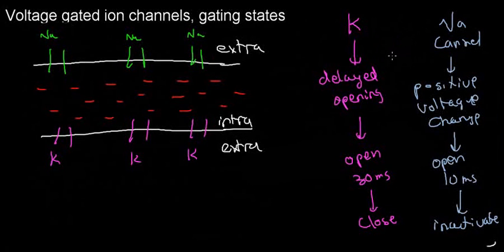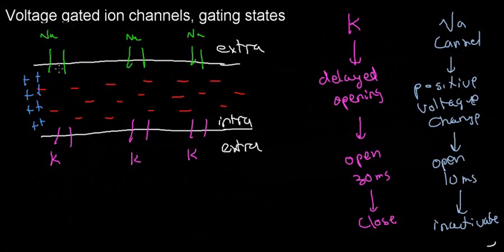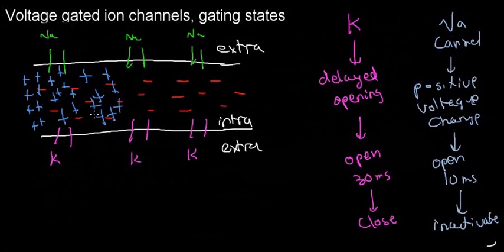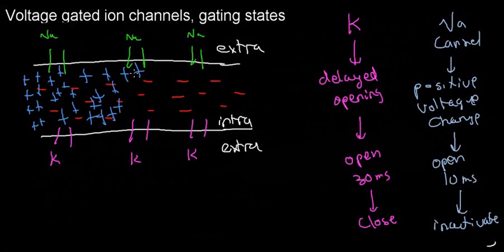If I take all this information and fashion some sort of event out of it, it looks like this. For some reason I have a positive charge here, and we already know that a positive charge opens a sodium channel. Sodium rushes in, and now I have a lot more positive charges flowing in. The next sodium channel also notices there's a positive charge in its vicinity and opens up, letting in more sodium — things get more positive as well.